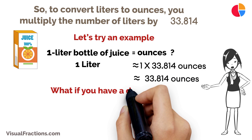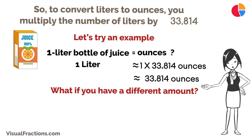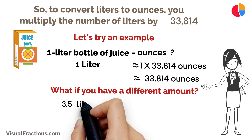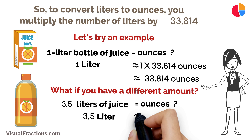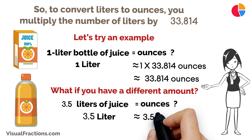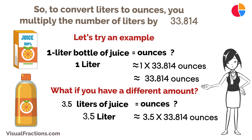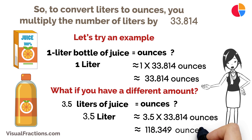What if you have a different amount? Let's say you're preparing a punch that requires 3.5 liters of juice. To find out the number of ounces, you would multiply 3.5 liters by 33.814, which gives you 118.349 ounces. It's that easy.